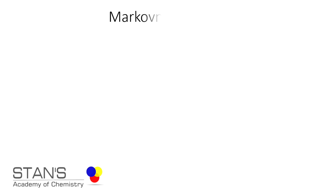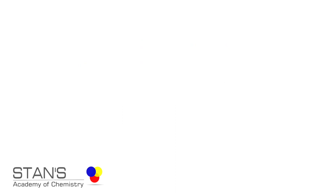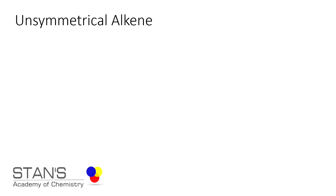When an unsymmetrical reagent is added to an unsymmetrical alkene, the negative part of the reagent is added onto the carbon atom of the alkene with the least number of hydrogen atoms. Before proceeding, we will first define what an unsymmetrical reagent is and what an unsymmetrical alkene is.